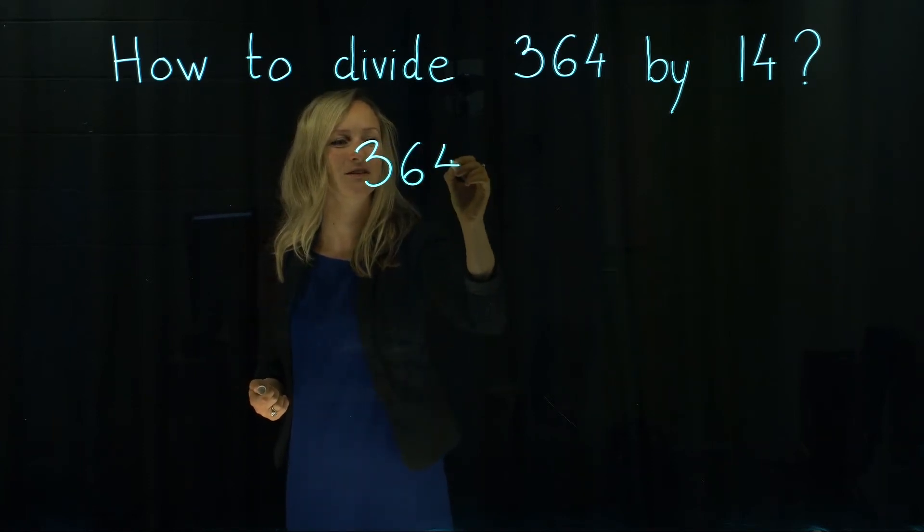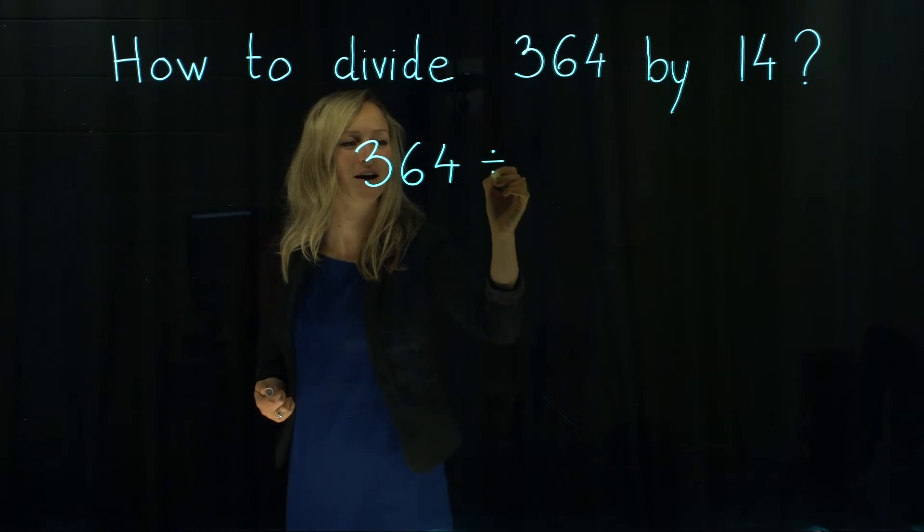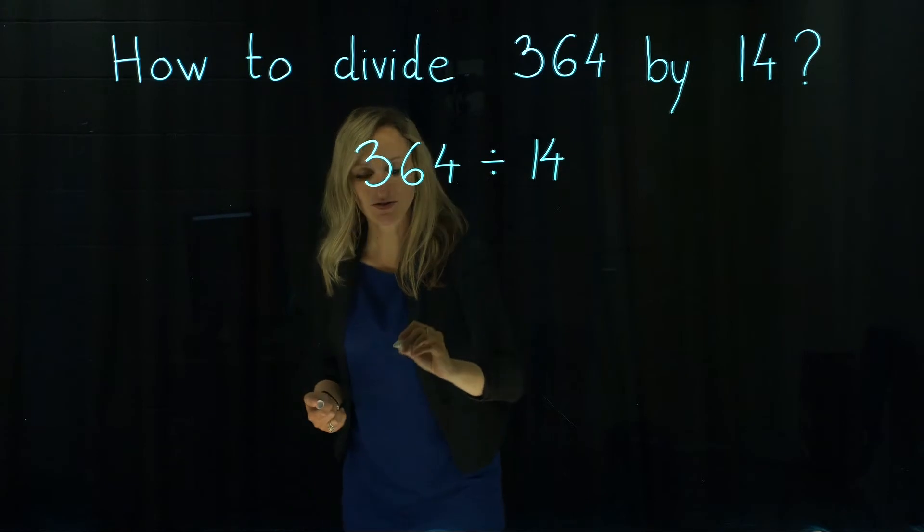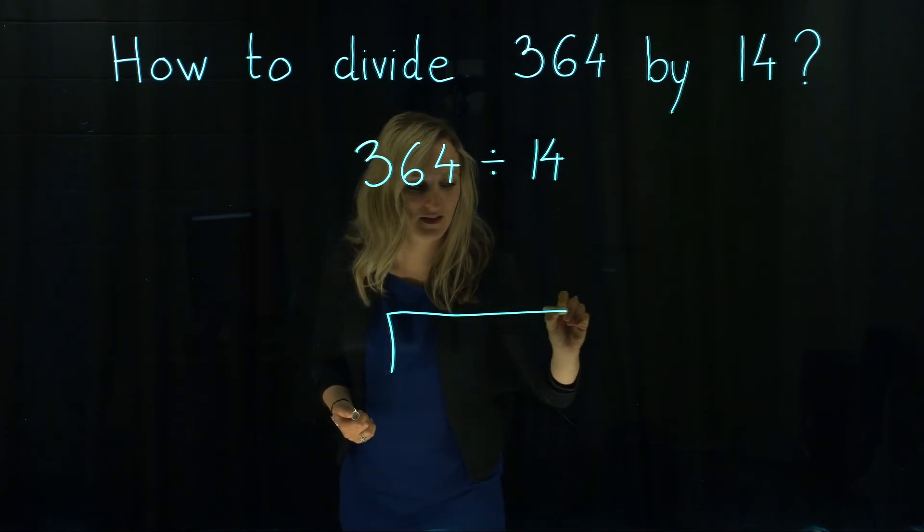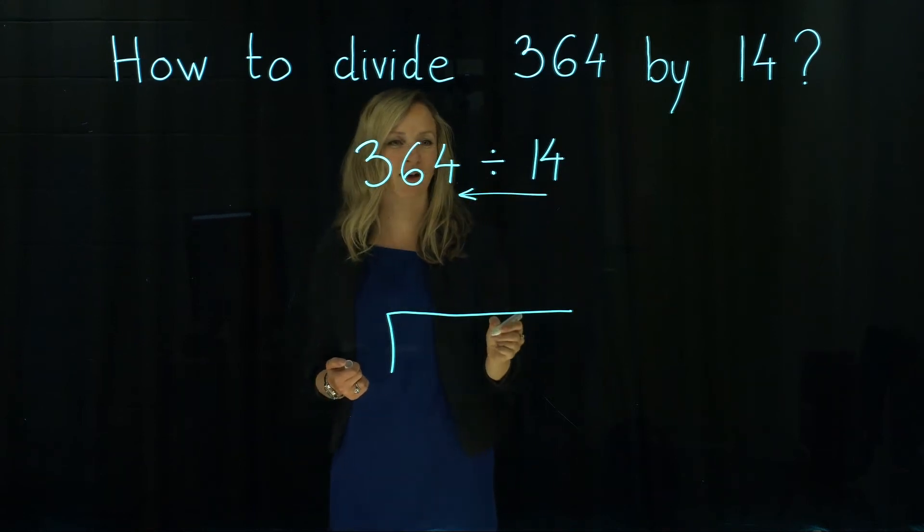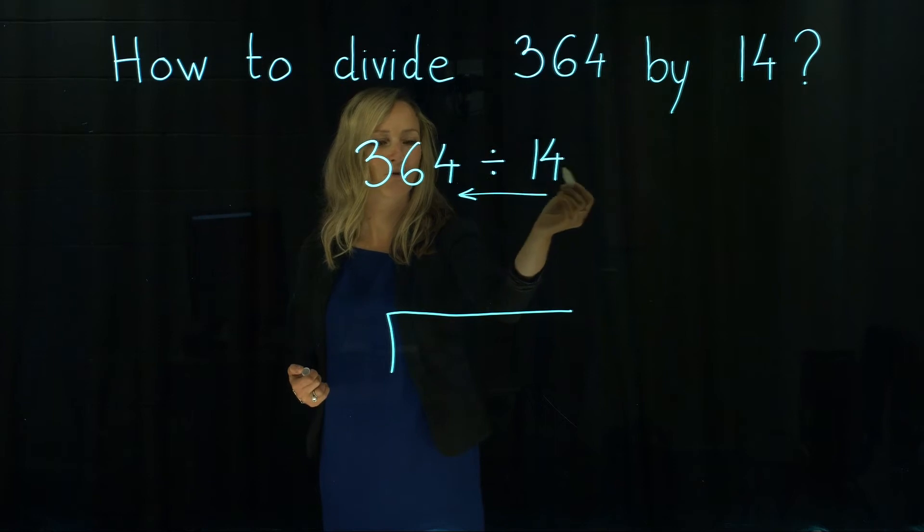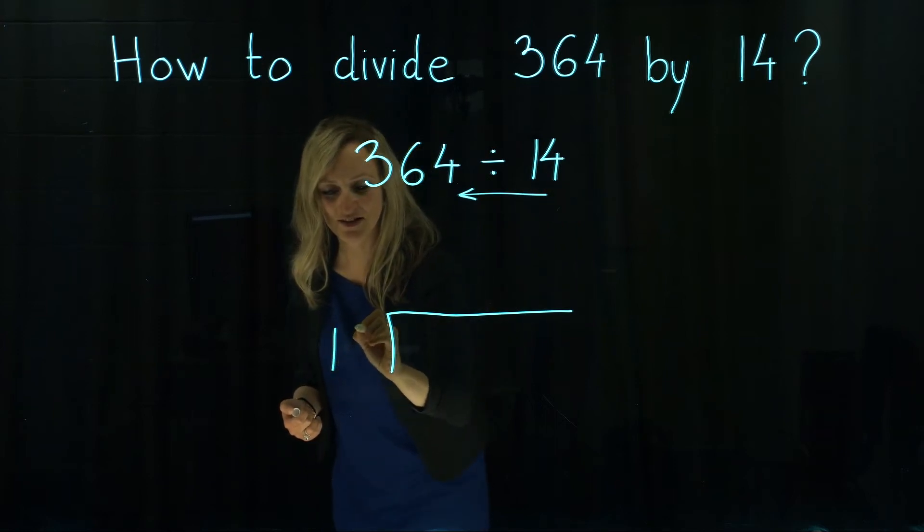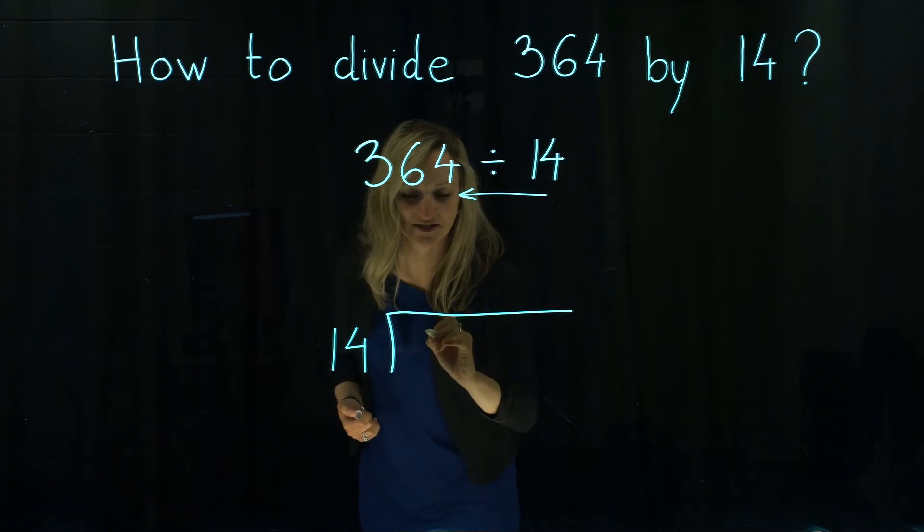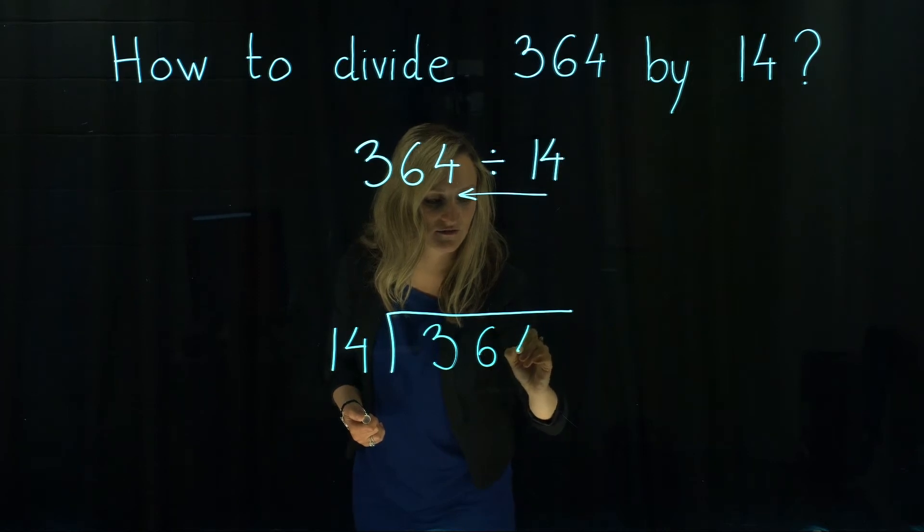So 364 divided by 14. We're going to put those two numbers in a division stage and we will write them in the opposite order as we did before. So 14 goes out of the division stage and under the division stage goes 364.